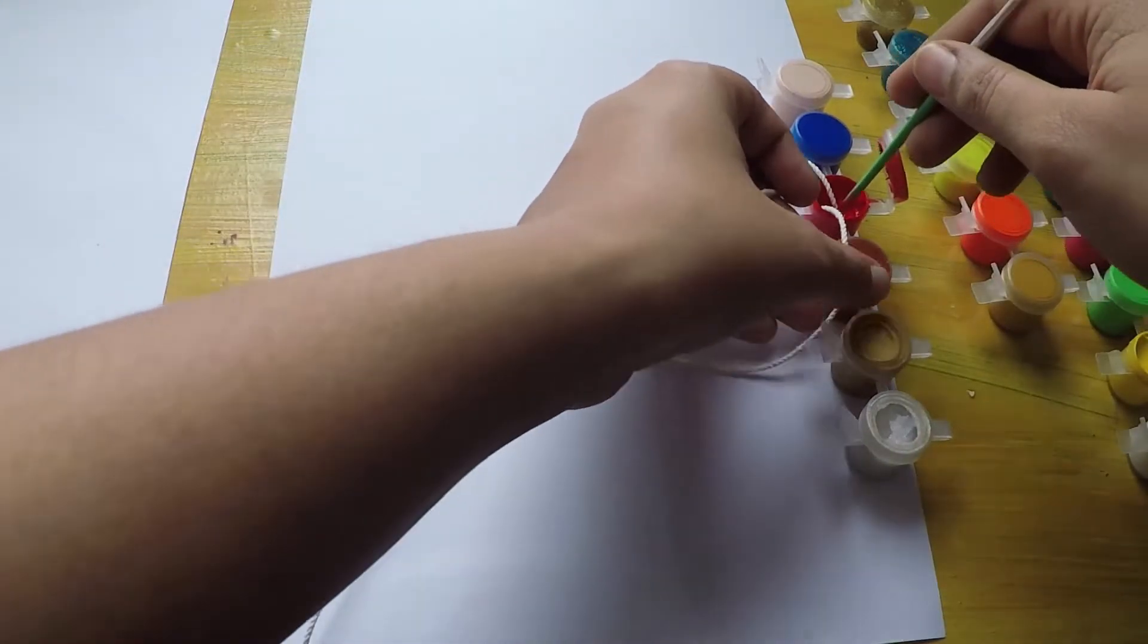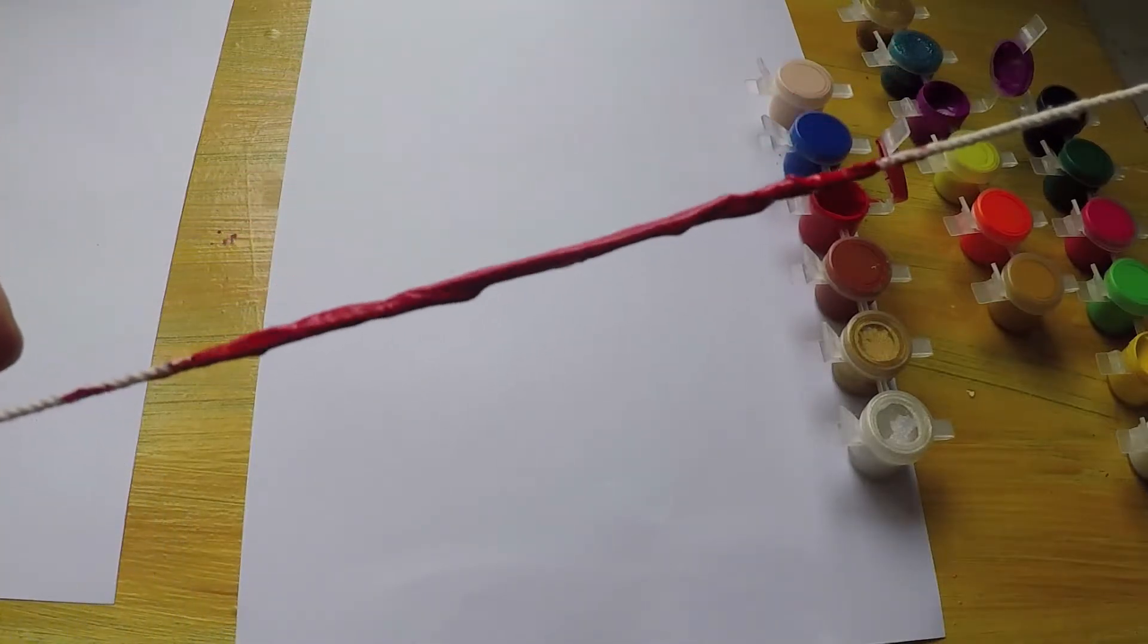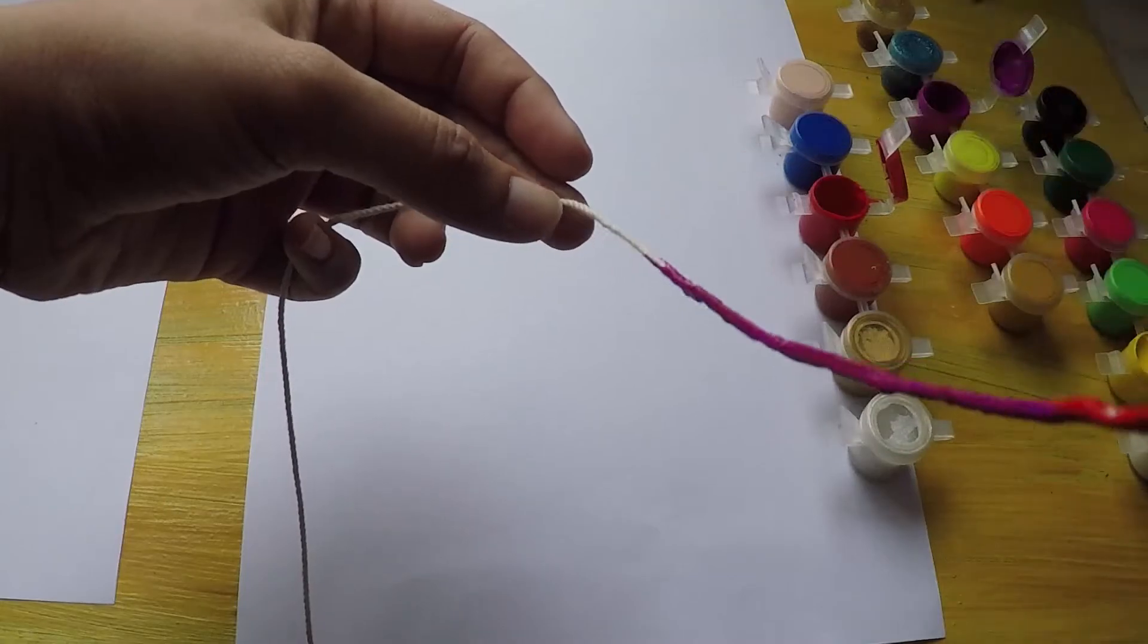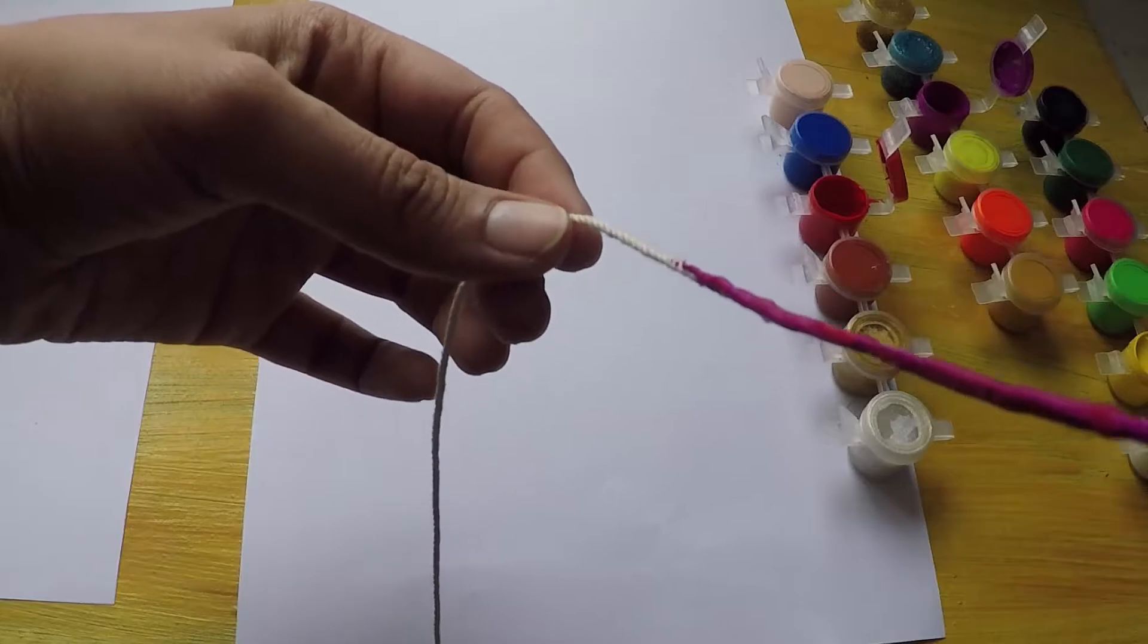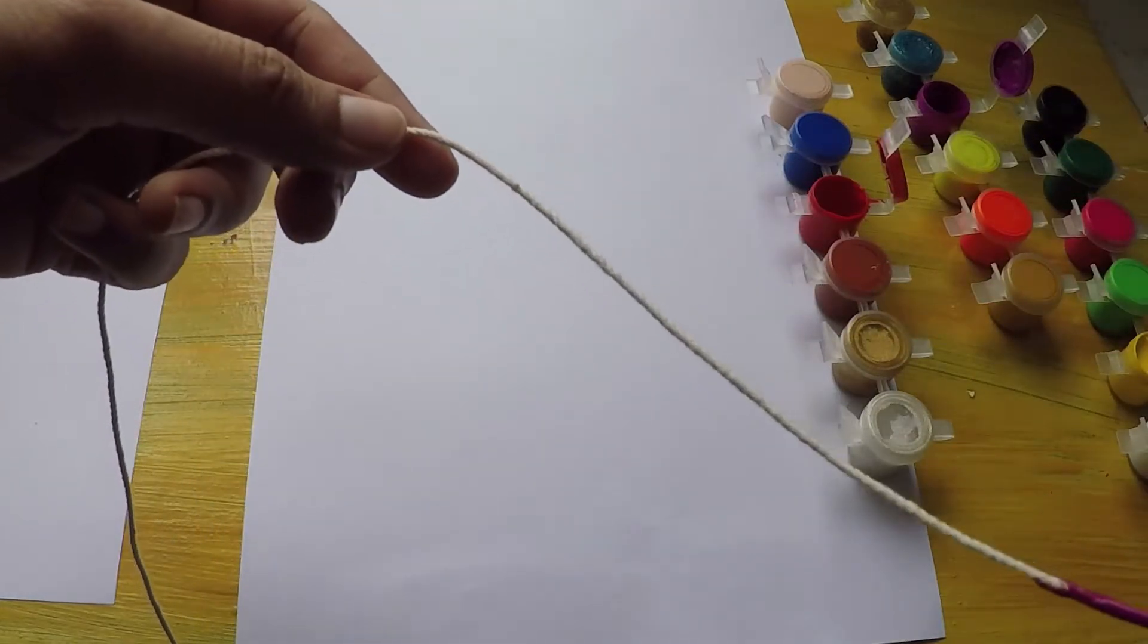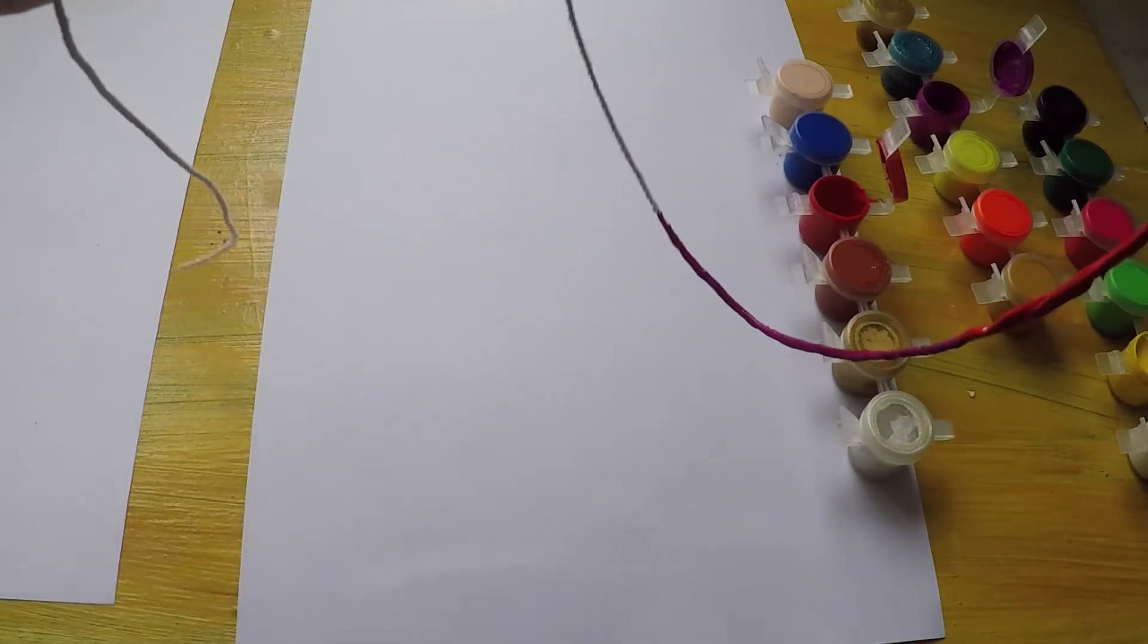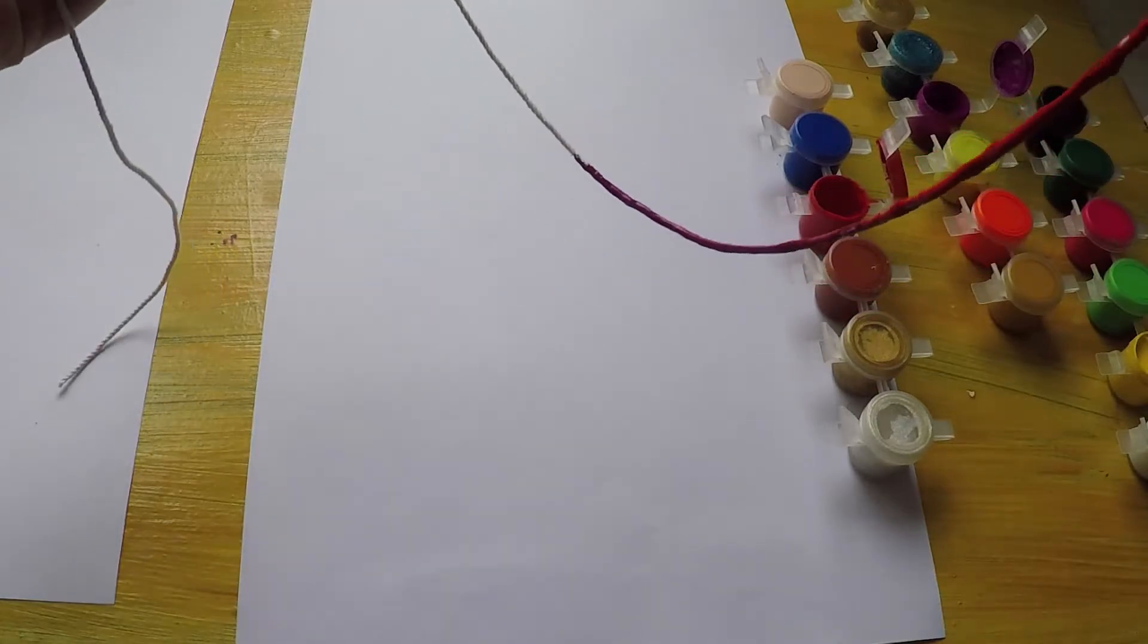Or you can use the brush and color it. Now we have applied red color, now we're going to take another color. Take another brush and you're going to apply another color. You can apply two colors, three colors, four colors depending on the length and the color you want.